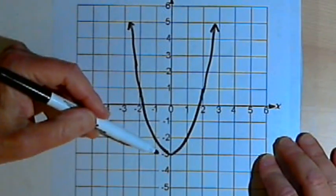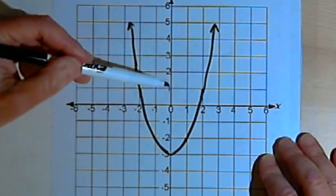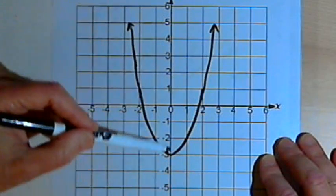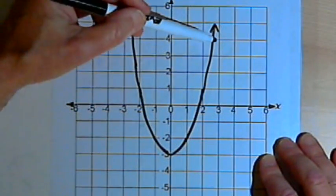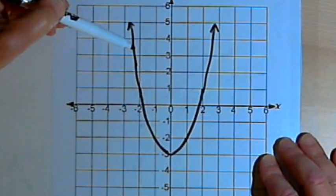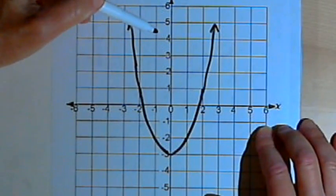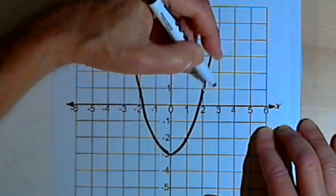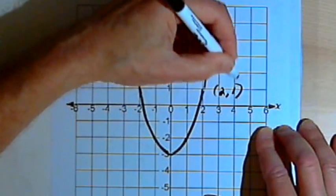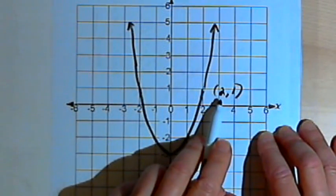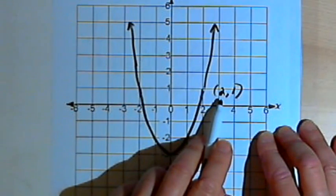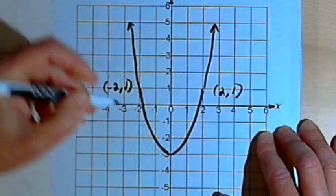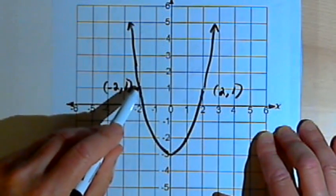I've got a graph of a parabola here. This graph is symmetrical with respect to the y-axis. What that means is, if I take the graph and fold it along the y-axis, both sides of that curve will match up with each other. Another way of thinking of this is that if I take a point on one side of the graph and change the sign of its x-coordinate — in this case the 2, so I make that a negative 2 — I have negative 2 comma 1.